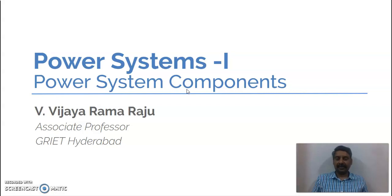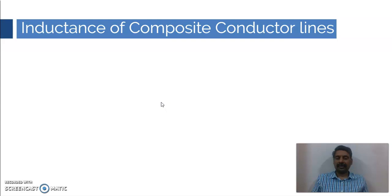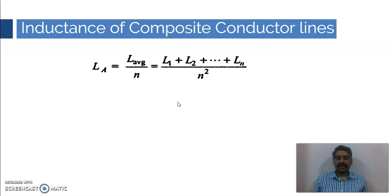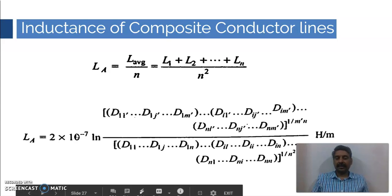Namaste. Let us continue the previous learning dialogue video where we are discussing about composite conductors. We have considered two cases of two conductors which are made of composite conductors — conductor A and conductor B — and we have seen the inductance of conductor A, which we obtained like this.